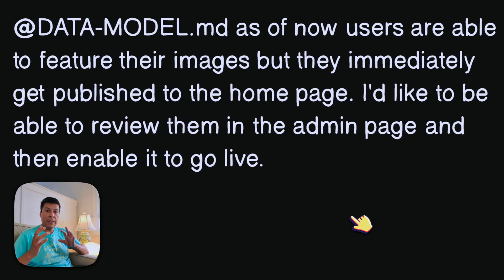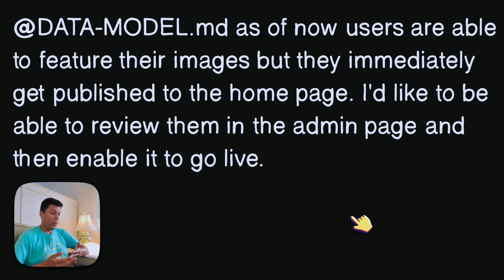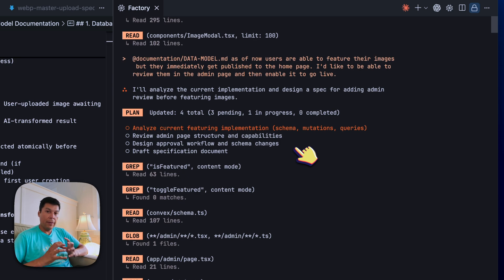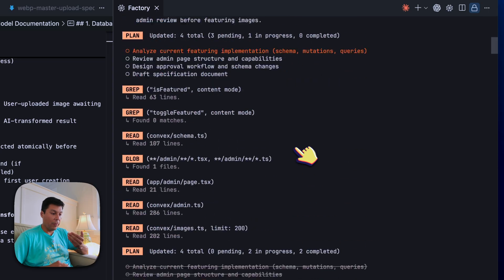Here's the prompt I'm going to use to implement this feature. I make sure I reference the file name — data model.md that was just created. And I say: as of now, users are able to feature their images but they immediately get published to the homepage. I'd like to be able to review them in the admin page, then enable it to go live. With that spec in mind, I hand it off to Droid using Sonnet 4.5, and it's able to implement the feature without a problem.